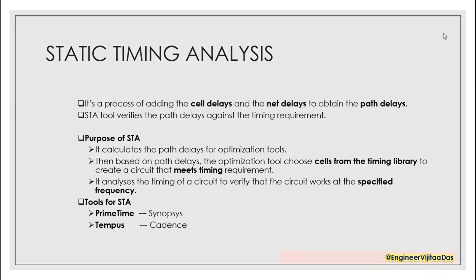We need to understand how static timing analysis is done. Basically it's a process where we add up the cell delays and the net delays to obtain the path delays. Cell delays means the gate delays — whatever gate we are using has certain gate delays. Between two gates there are also certain propagation delays, which are the net delays. We sum them up to get the total path delays.